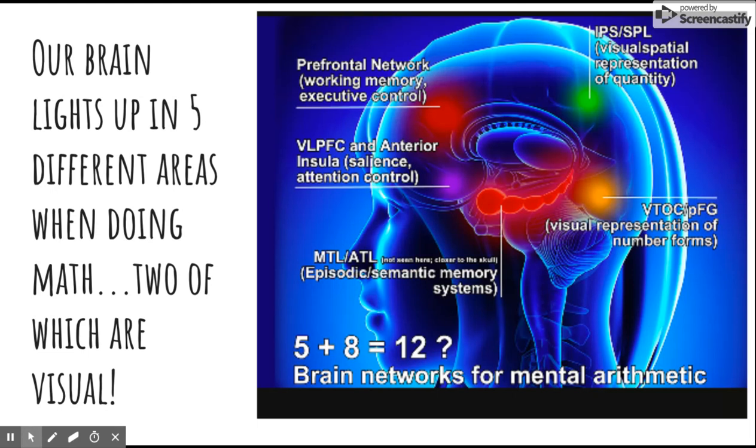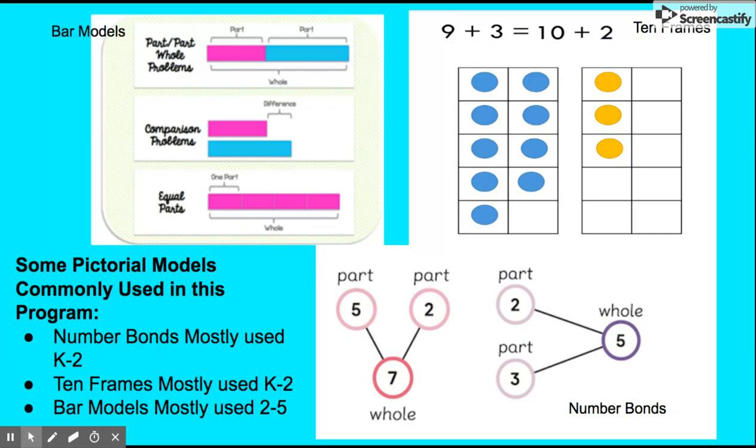Our brain lights up in five different areas while we're doing math. Two of these are visual. Because of this, we have some very useful pictorial models that we consistently use in our program. 10 frames are introduced in pre-k and kinder and used up until grade 2. Number bonds help us compose and decompose numbers. We can use this with addition or multiplication. Bar models are introduced in grade 2 as a way to visually represent the math we're exploring, primarily with word problems. These are a very important first step toward algebraic understanding.